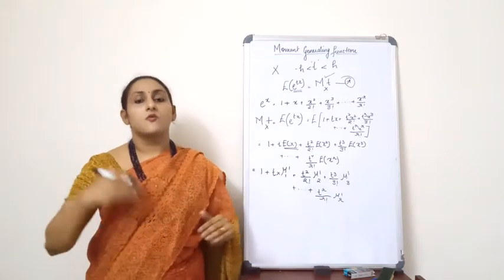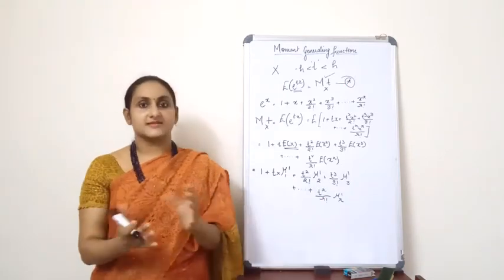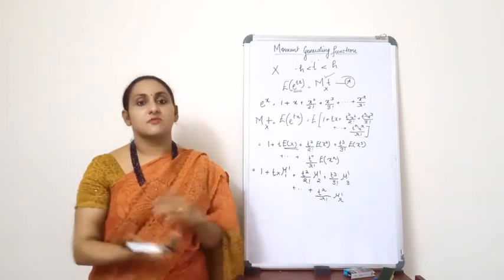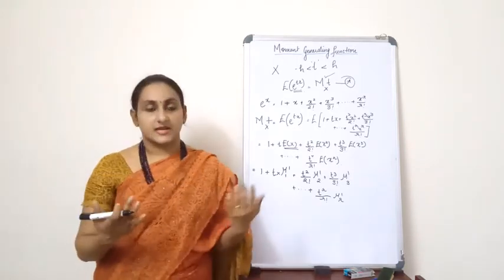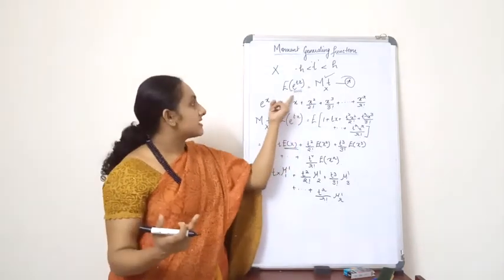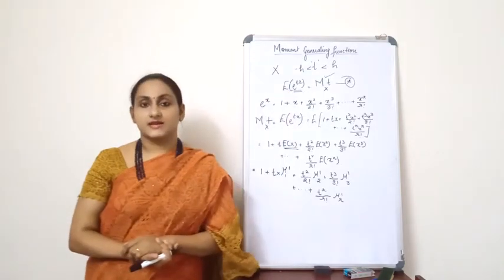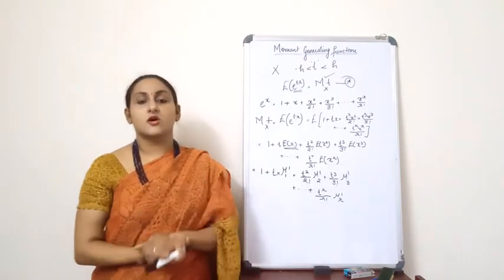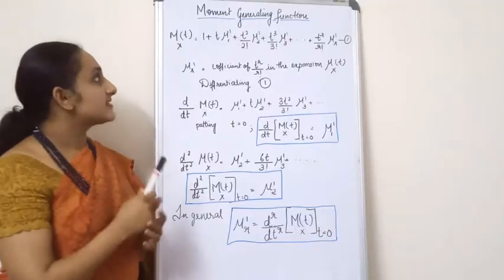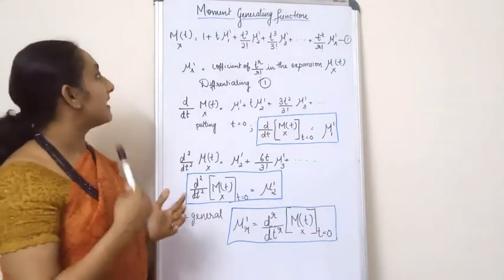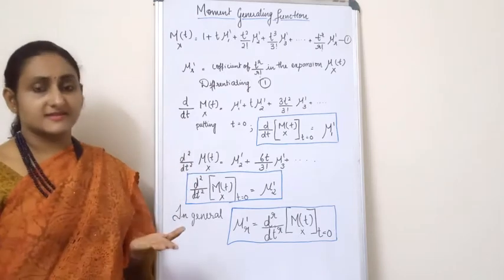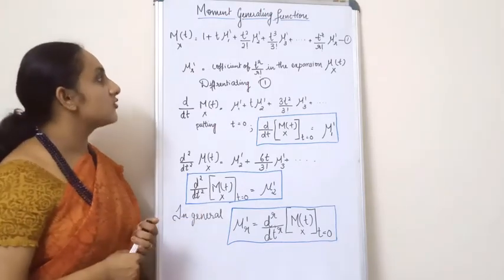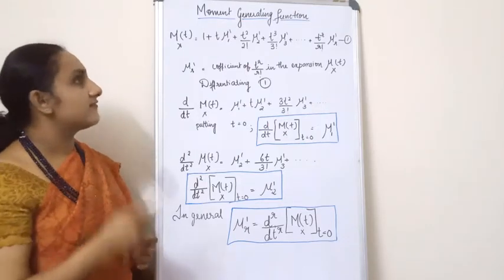I hope you all understand why the moment generating function M_t(x) is named that way. When you expand the function, you are generating moments — that is why it is called the moment generating function. It is denoted by M_t(x), which equals the expectation of e raised to tx. This formula and the expansion are important to keep in mind for solving problems. The rth row moment μ'_r is the coefficient of t raised to r divided by r factorial in the expansion of M_t(x).